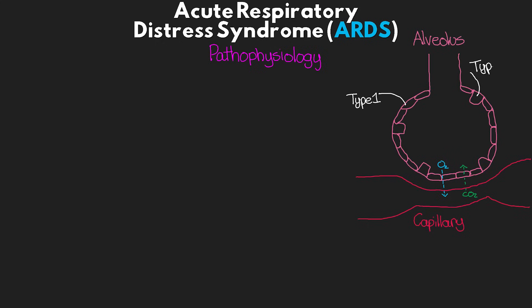Scattered throughout are type 2 pneumocytes — larger cuboidal cells that serve several purposes. Their primary function is production of surfactant, which decreases surface tension and helps keep alveoli open, as well as epithelial repair. They also contain fluid channels that move fluid from inside the alveolus to the outside environment. The capillary below consists of a single layer of epithelial cells creating a passageway for red blood cells to participate in gas exchange.